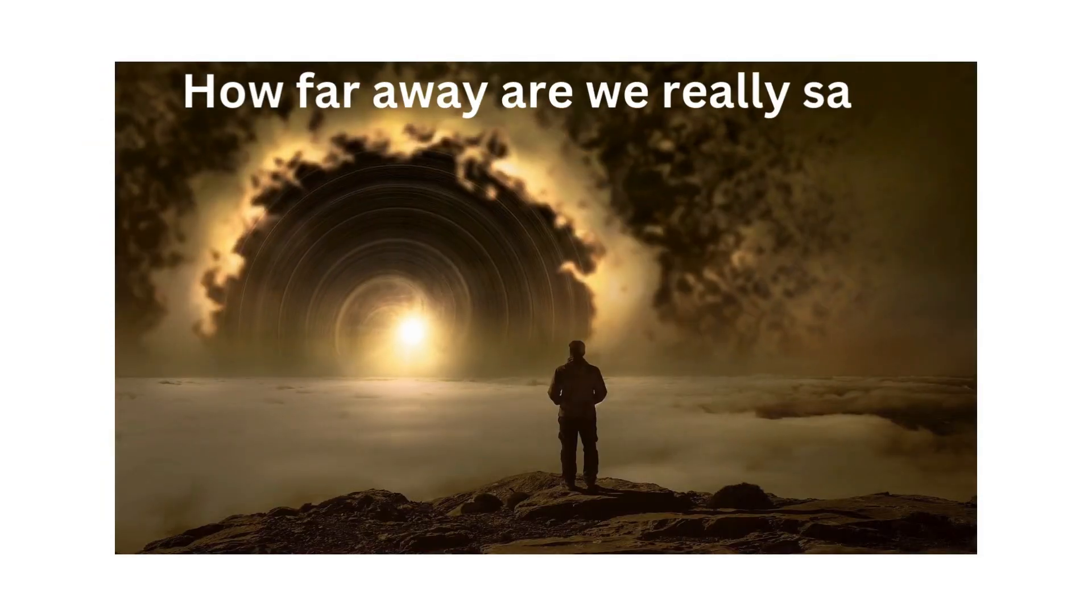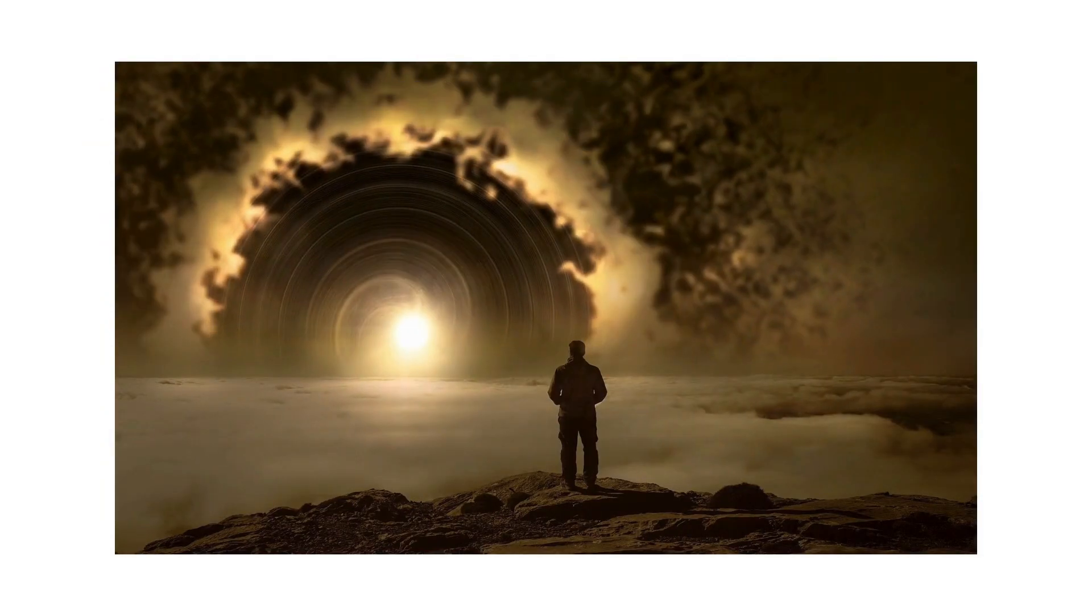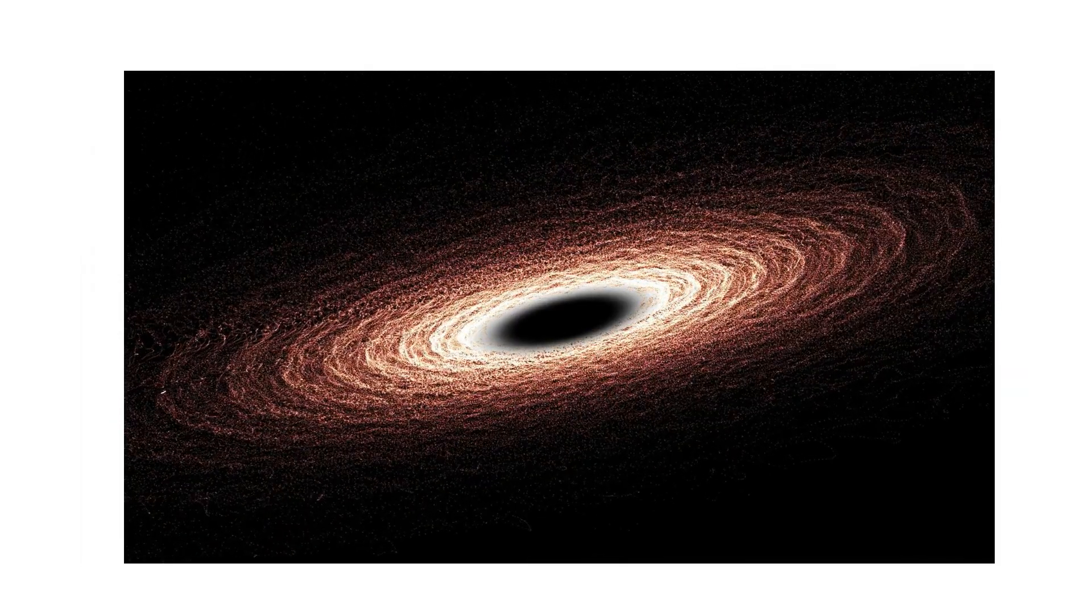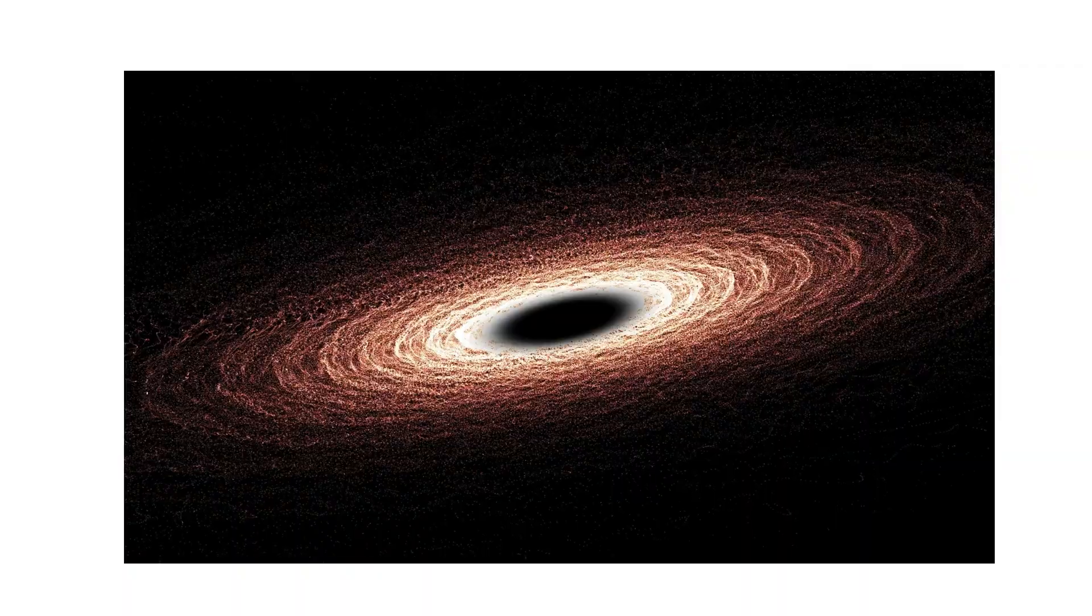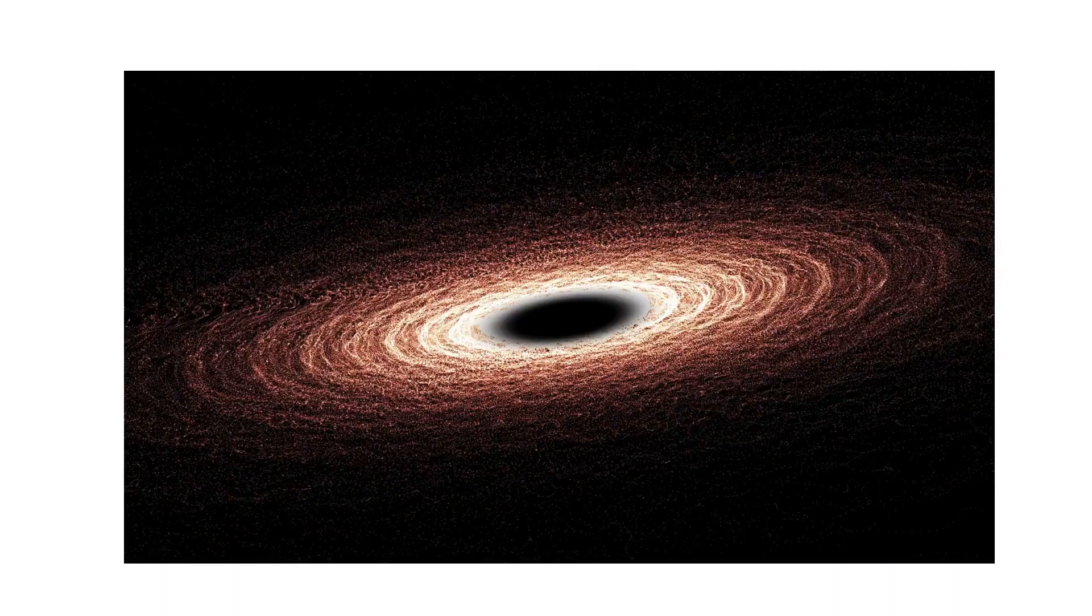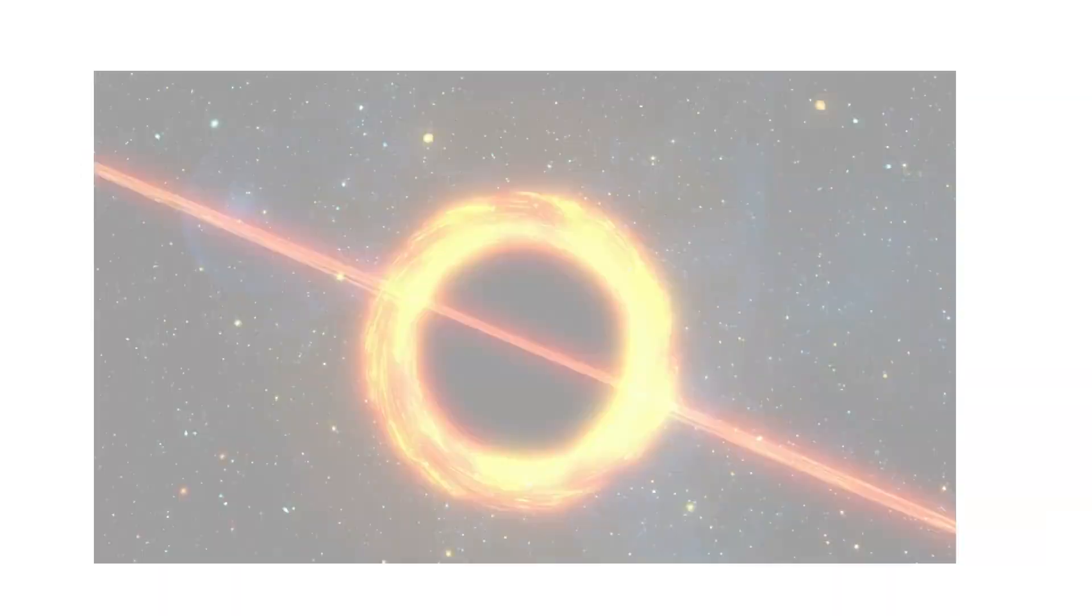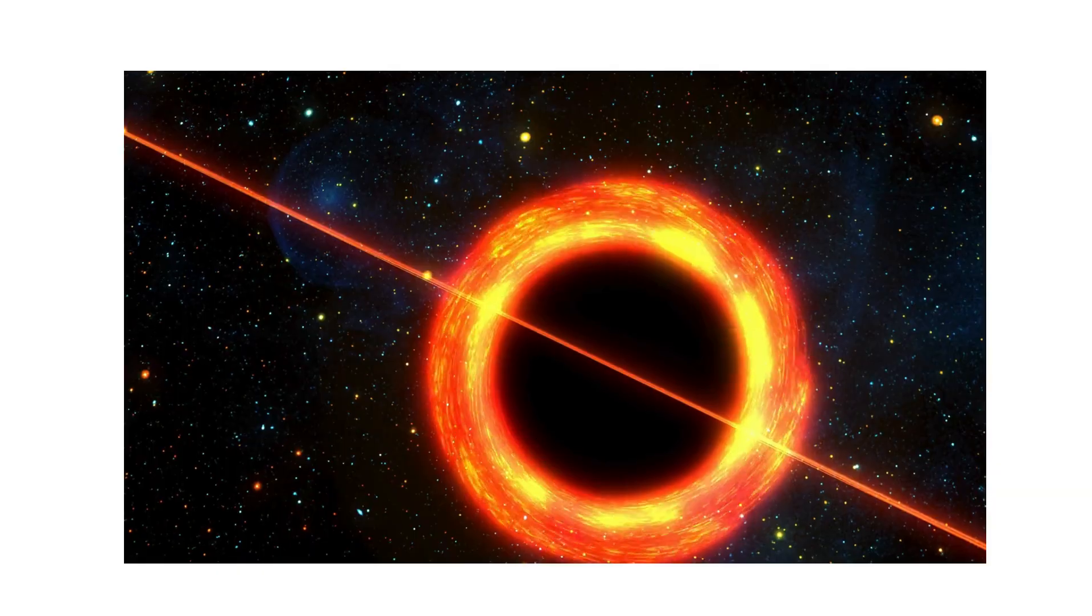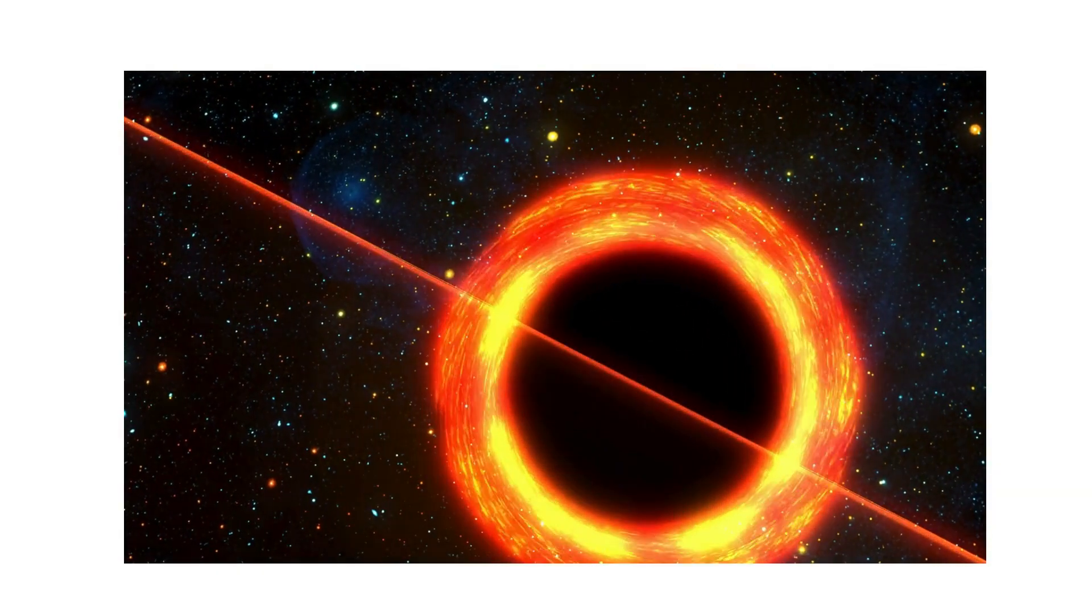How far away are we really safe? Safety from black holes depends on distance and activity. For stellar mass black holes, Earth is safe as long as they remain more than a few dozen light years away. At such distances, their gravitational pull is negligible compared to that of the Sun, and even if accreting, their radiation weakens with distance according to the inverse square law.